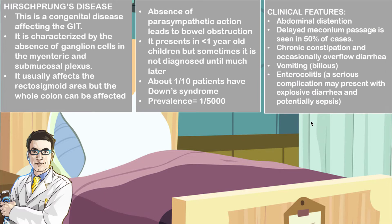Clinical features include abdominal distension, obviously because of the loss of innervation from the ganglion cells in the distal segments of the bowel. You may have a delay in passage of meconium — this is the cause in 50% of cases where children do not pass meconium, so you should suspect they may have Hirschsprung's disease. There may also be chronic constipation and occasionally overflow diarrhea.